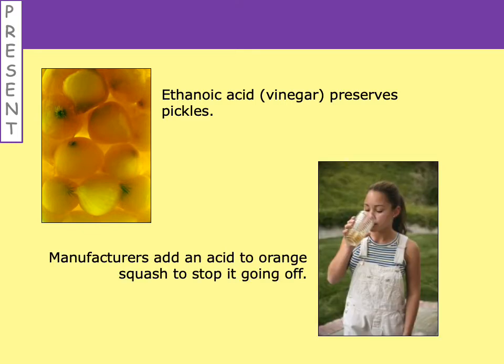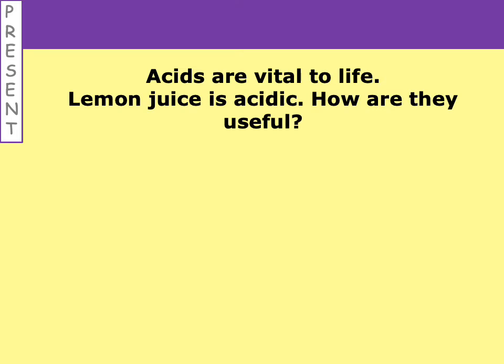For the same reason, manufacturers add acid to orange squash to stop it from going off. If you've got squash in your cupboard — not fresh orange juice, but orange squash that you add water to — you don't need to keep it in the fridge. It keeps for months because manufacturers have added acid into it. So acids are vital to life. Lemon juice is acidic, so let's think about how lemons can be useful — I'll give you a minute to write down your ideas.